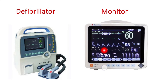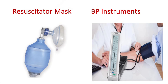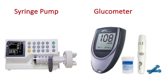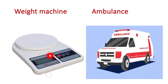This is the patient's monitor where the patient's heart rate, respiration rate, and blood pressure are shown — so this is called patient's monitor. This is the resuscitator mask, which is used in CPR — cardiopulmonary resuscitation — also called Ambu bag. BP instrument — sphygmomanometer — and stethoscope. This is a syringe pump. The glucometer to check the blood sugar level. A weight machine to check the patient's body weight. Ambulance.